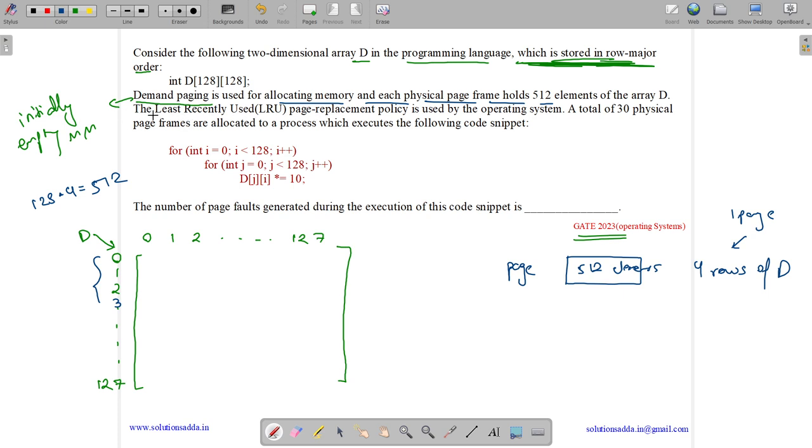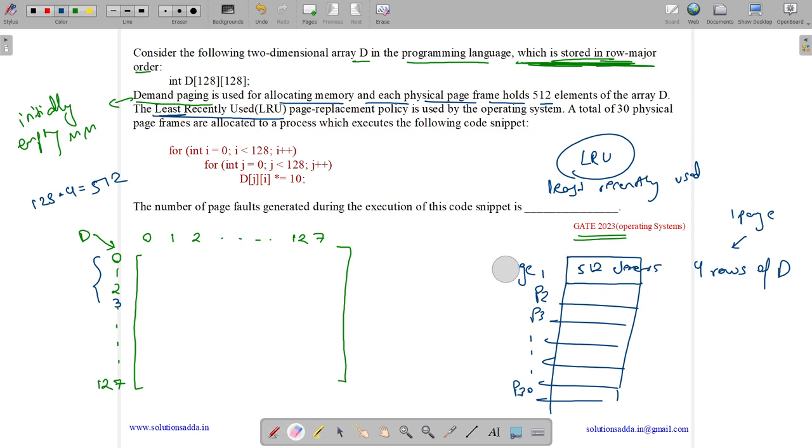The LRU page replacement policy is used by the operating system. LRU means least recently used, which means the page that has been referred least recently in the past will be replaced. A total of 30 physical page frames are allotted to a process. We have page 1, page 2, page 3, up till page 30. Initially all of them are empty as we are using demand paging. One page can store 4 rows.